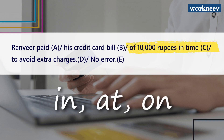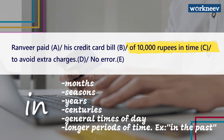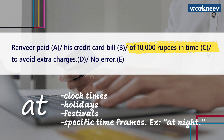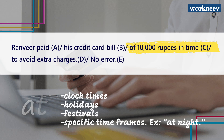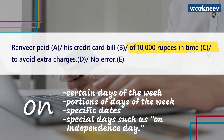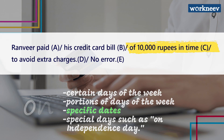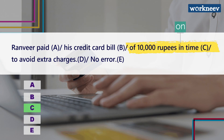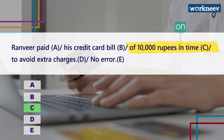We use 'in' to discuss months, seasons, years, centuries, general times of day, and longer periods such as 'in the past.' We use 'at' to discuss clock times, holidays, festivals, and very specific time frames including exceptions like 'at night.' We use 'on' to discuss certain days of the week, specific dates, and special days such as 'on Independence Day.' In this question, 'on time' represents a deadline, which comes under specific dates, so we use 'on.' The correct sentence is 'Ranvir paid his credit card bill of 10,000 rupees on time to avoid extra charges.'